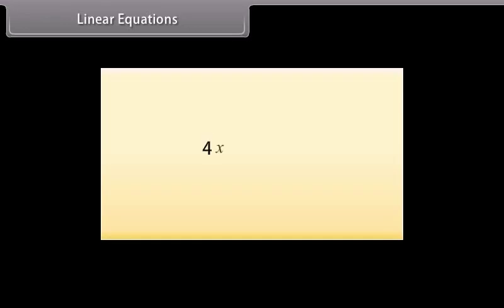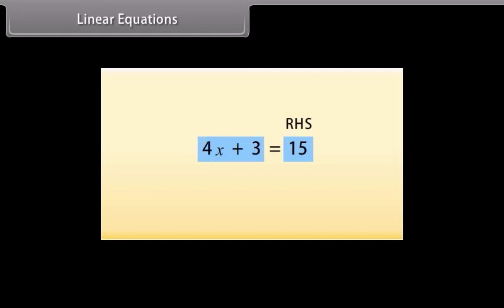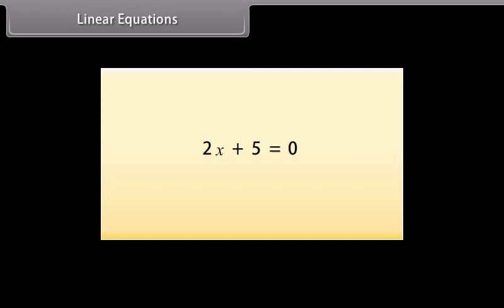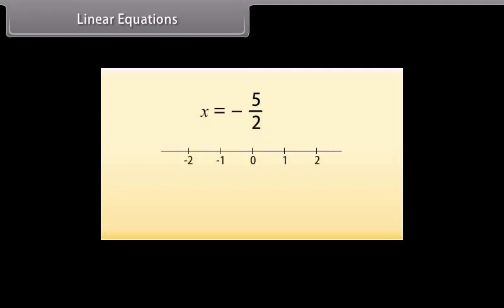A linear equation is an equality between two algebraic expressions involving an unknown value called the variable. The two sides of an equation are called the right-hand side or RHS and left-hand side or LHS. Consider this equation — the solution, or the root of this equation, is minus 5 by 2. Let's see where it represents on the number line. Here it is.